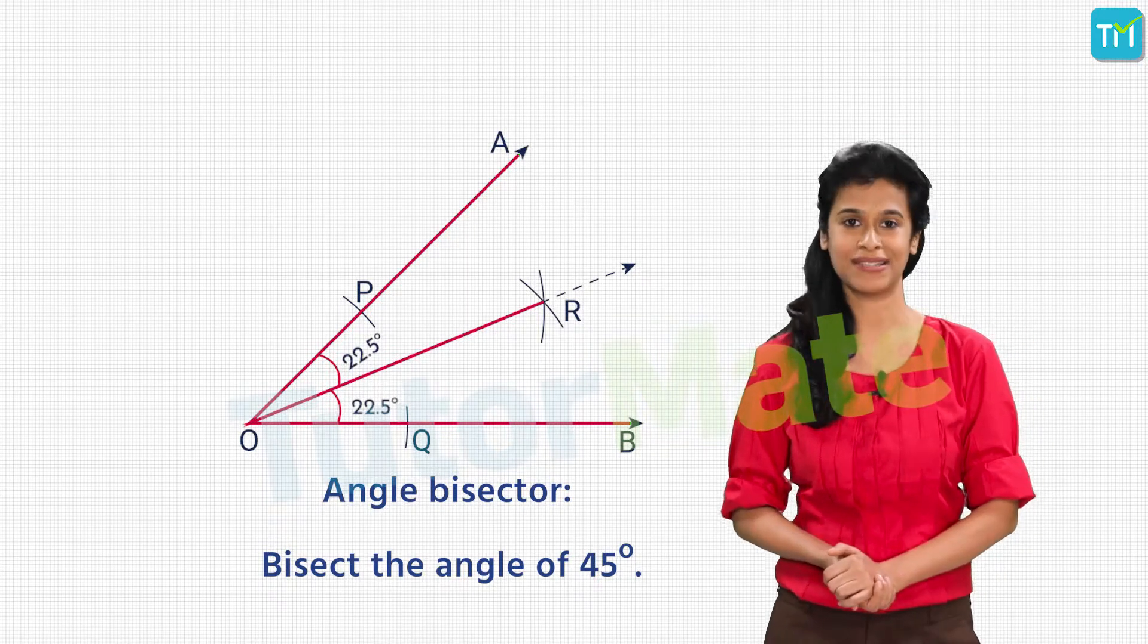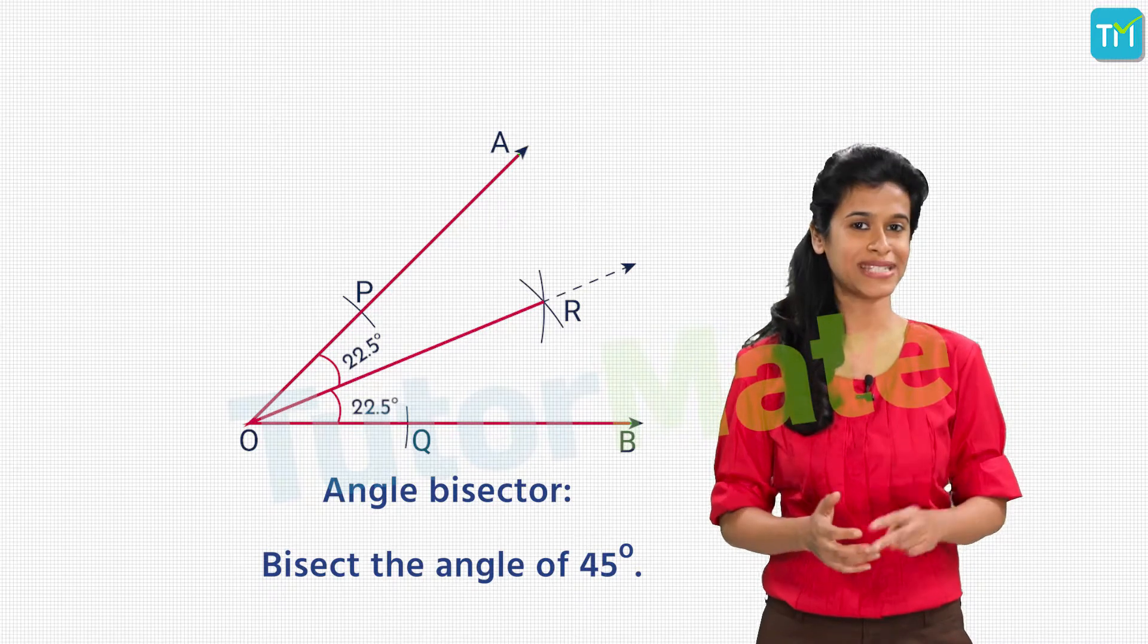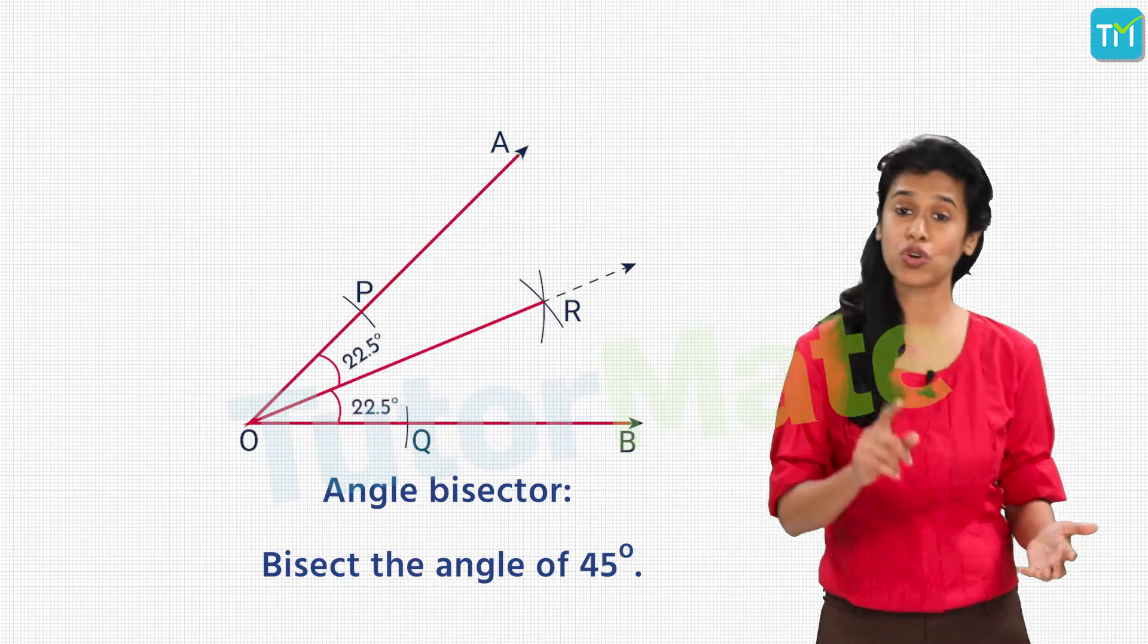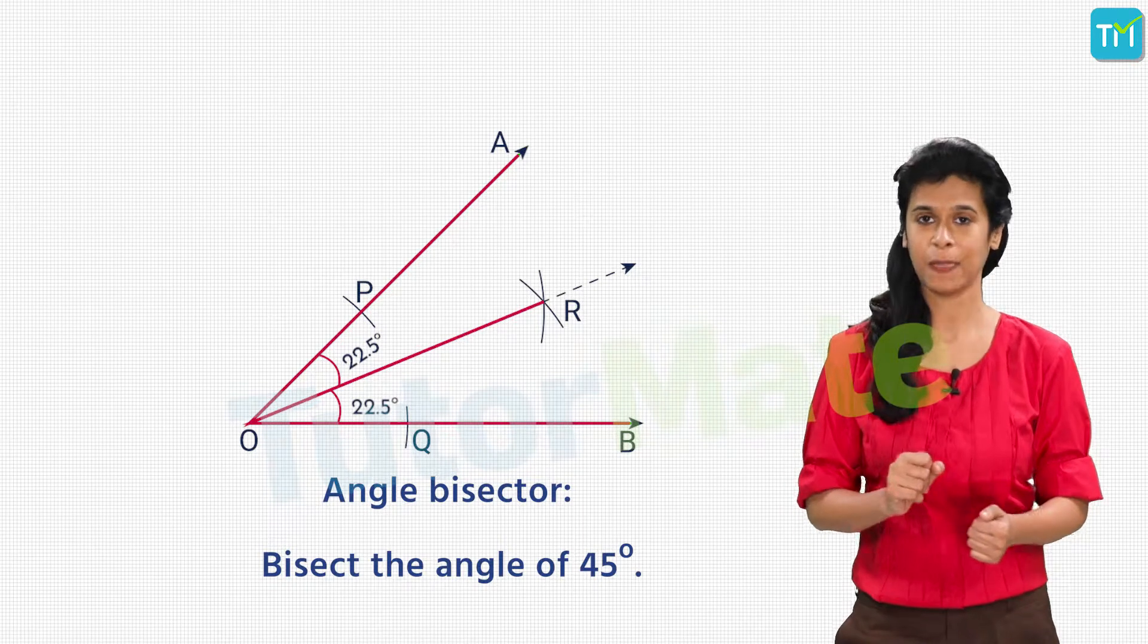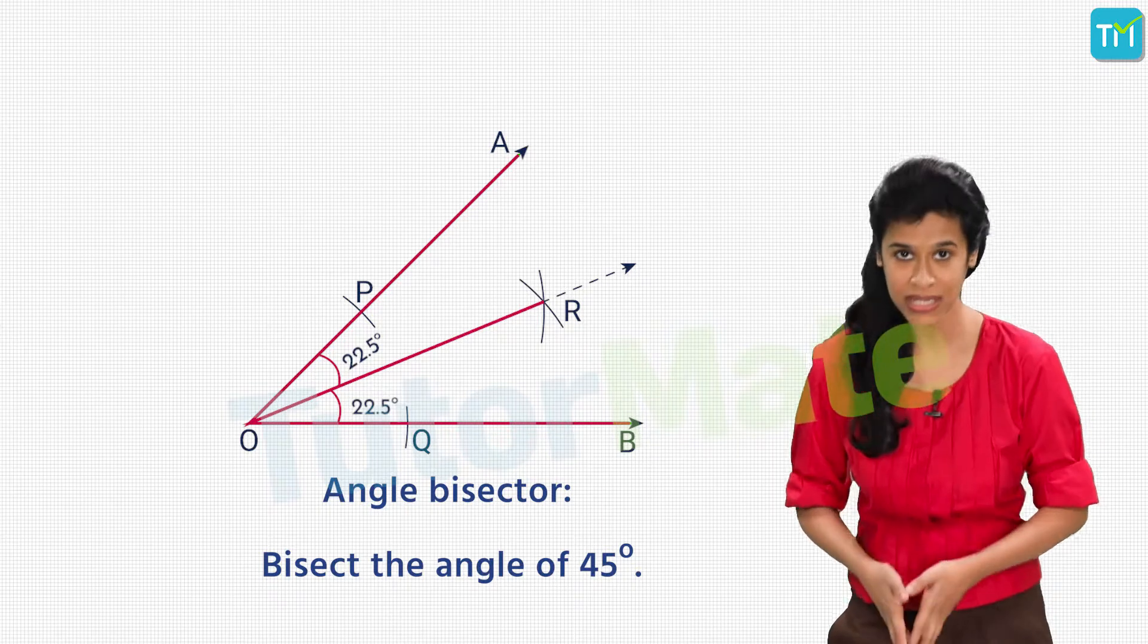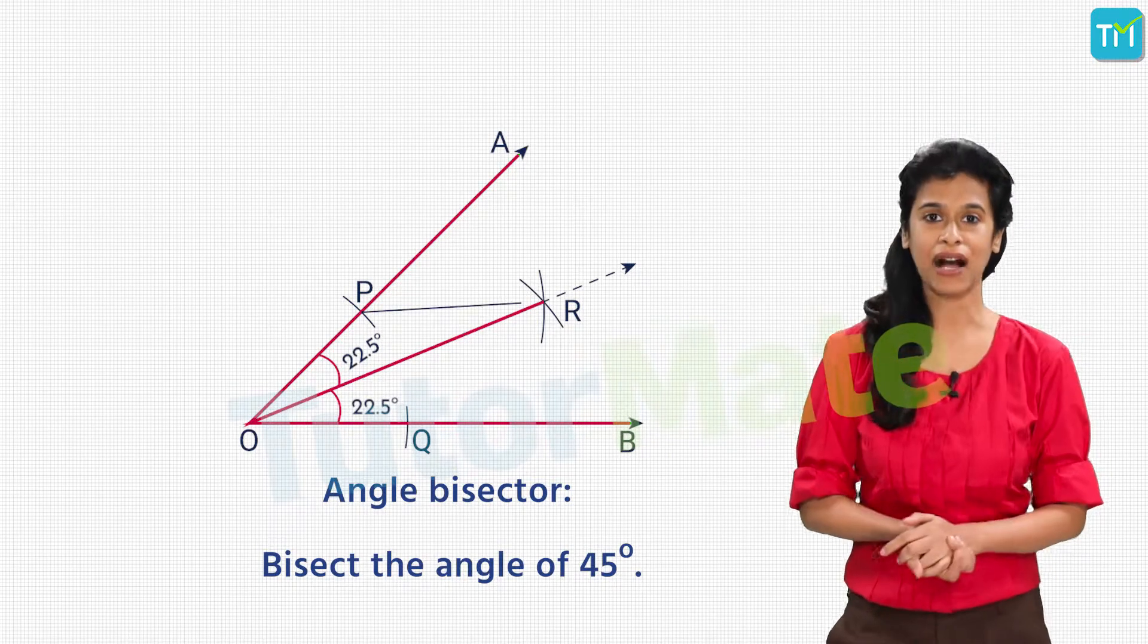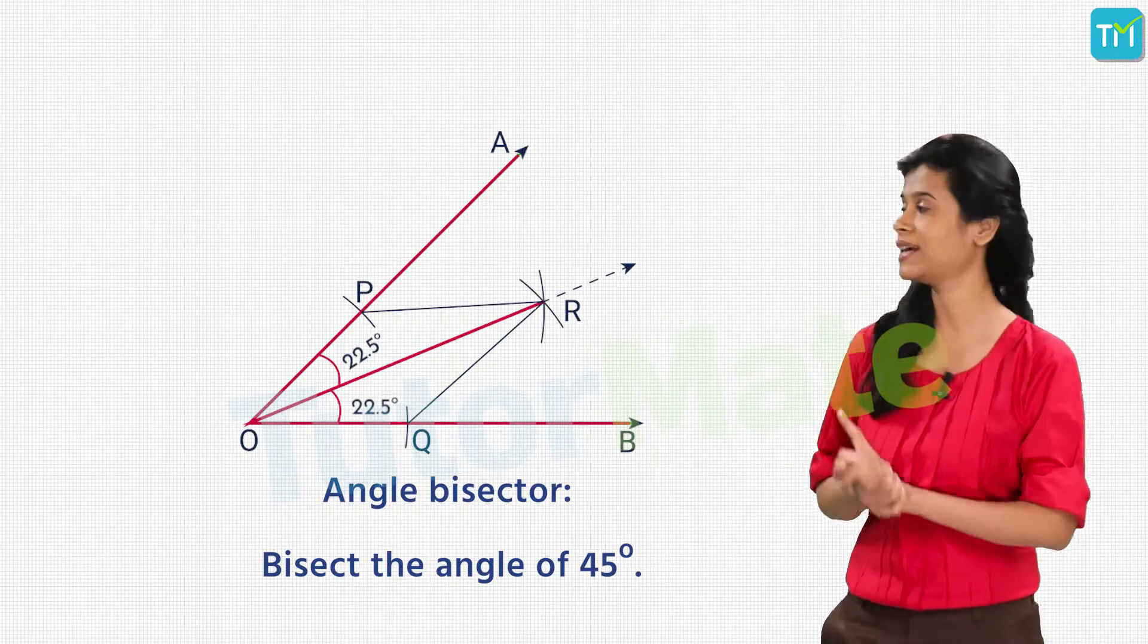Now, we have studied congruency in triangles, right? And we know that whenever we want to prove two quantities as equal, we can prove that the triangles containing the sides or the angles are congruent. So, the quantities become equal to each other by CPCT. Here, let's try to prove that OR bisects angle AOB theoretically using the congruency test for triangles.